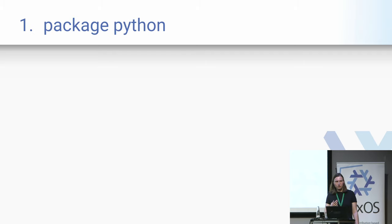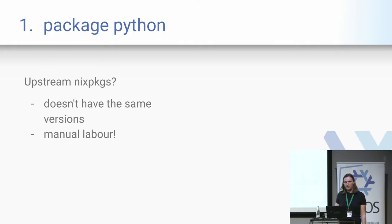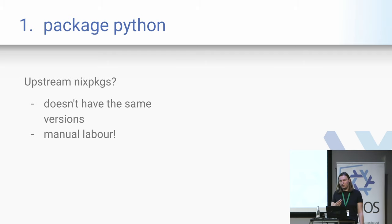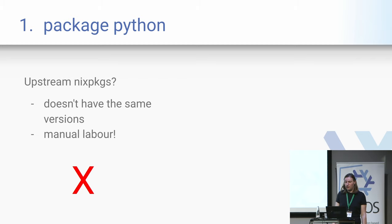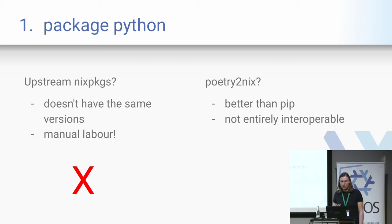So the first step: how do you package Python easily in Nix? I first looked at the upstream nixpkgs infrastructure. There are Python packages in nixpkgs, of course, and they have one version of everything — hopefully it's the right version, but it's probably not. You have to package things manually, but it does have all of the patches to make packages compatible with Nix, so that's nice. But I found it to be too much manual labor.